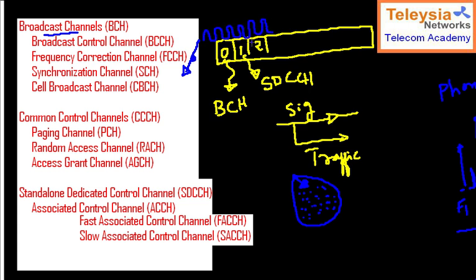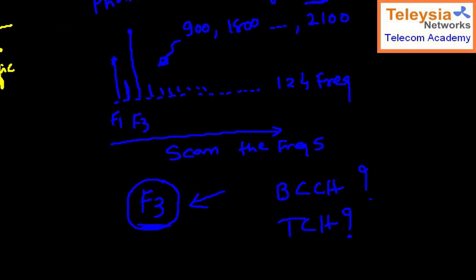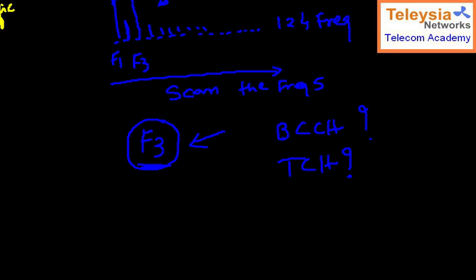The FCCH contains no real information — it only transmits a sine wave, essentially a carrier frequency. It's like a plain carrier wave or CW signal. If we receive this kind of signal on F3, we can lock our receiver onto this frequency and confirm that F3 is a BCCH frequency. If the FCCH is not found on F3, then F3 may not be a BCCH frequency.